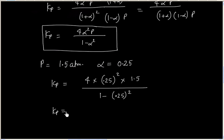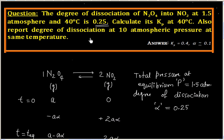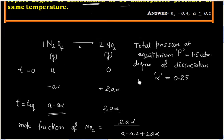Kp is 0.4. Second part of the question says calculate degree of dissociation at 10 atmospheric pressure.